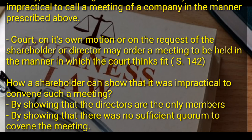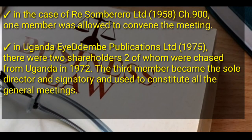Shareholders can show it is impractical to convene a meeting by showing that the directors are the only members of the company, or by showing that there is no sufficient quorum to convene the meeting. An example was seen in the case of Risomberedo Limited [1958] Chancery Division 900, where one member was allowed to convene the meeting. In the case of Uganda Idembe Publications Limited [1975], there were two shareholders who were chased from Uganda in 1972, and the third member became the sole director and signatory and used to convene all the general meetings.